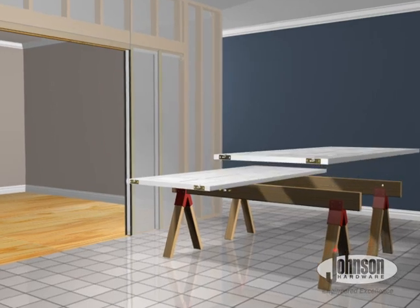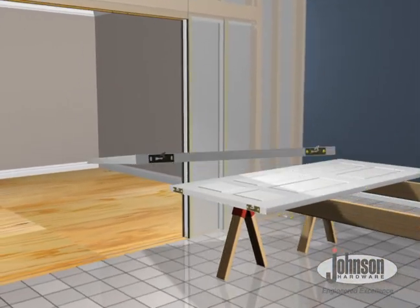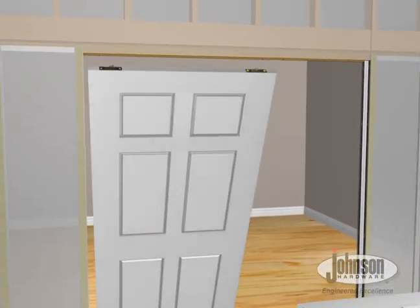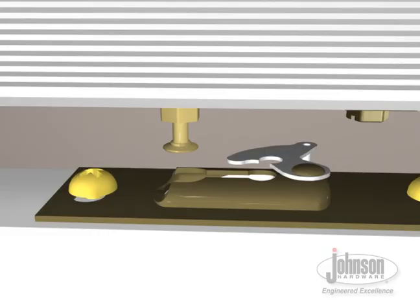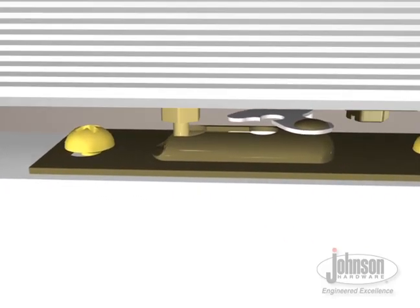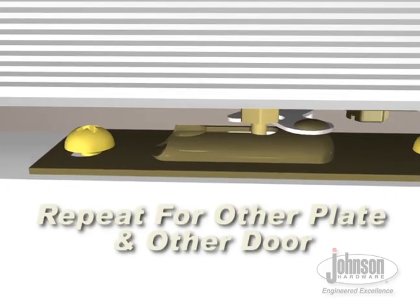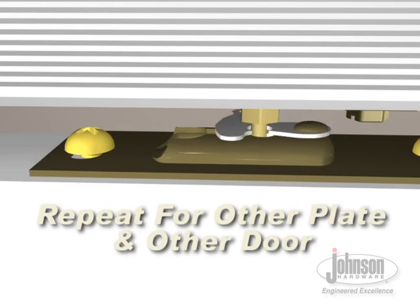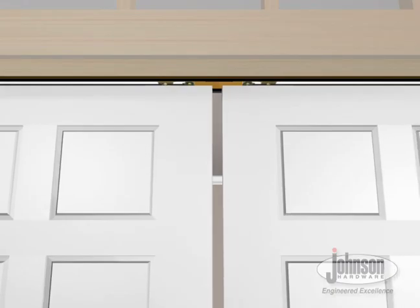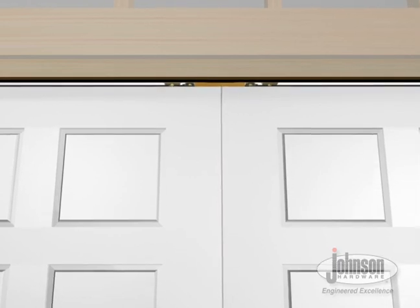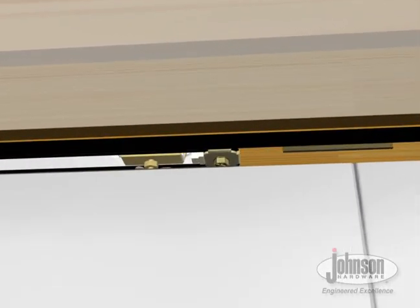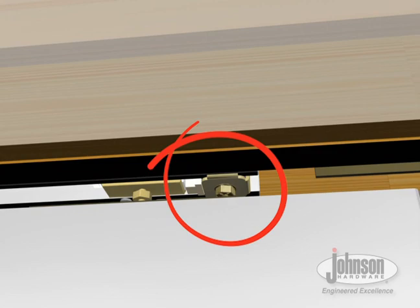Mount each door by locating door plate under adjusting bolt of hanger. Lift door and push bolt into each of the door plates. With doors hung in proper position, fasten door stops installed in Step 1.